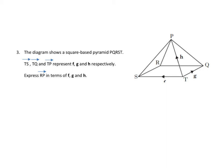We've got TS which is represented by f, and we have TQ which is g. We have TP which is h. And we're trying to figure out how to get from R to P in terms of f, g, and h. So obviously we can go this short way, R up to P, but we don't have enough information there. But there's other directions we can go.